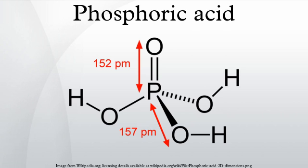In addition to being a chemical reagent, phosphoric acid has a wide variety of uses, including as a rust inhibitor, food additive, dental and orthopedic etchant, electrolyte, flux, dispersing agent, industrial etchant, fertilizer feedstock, and component of home cleaning products.